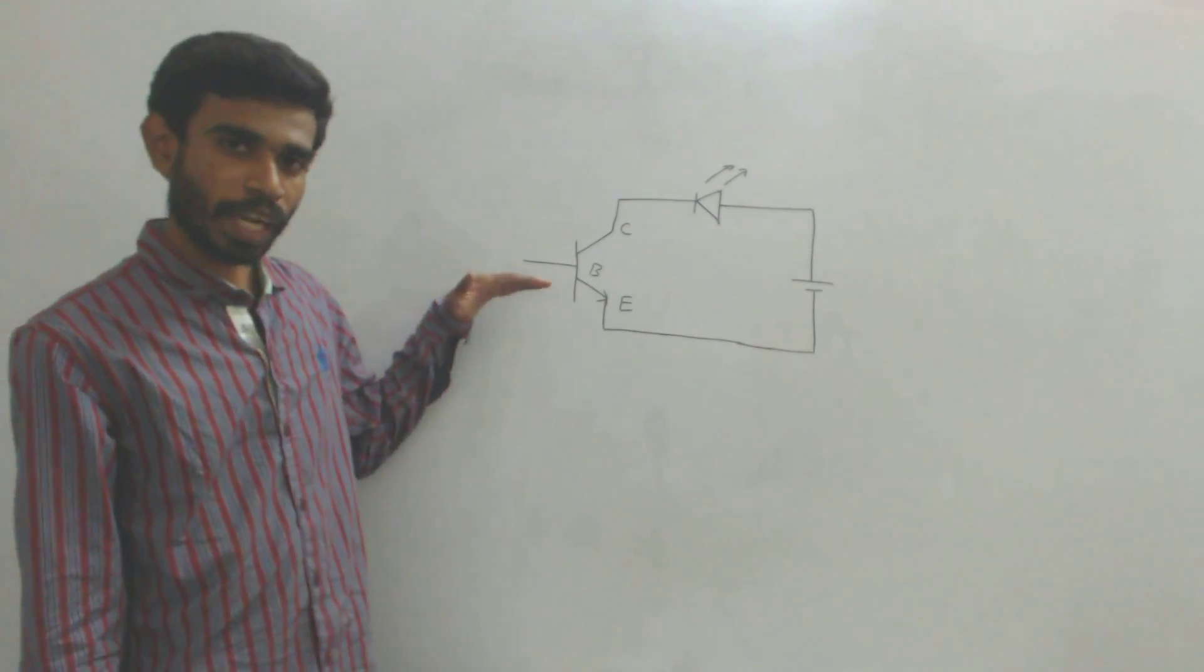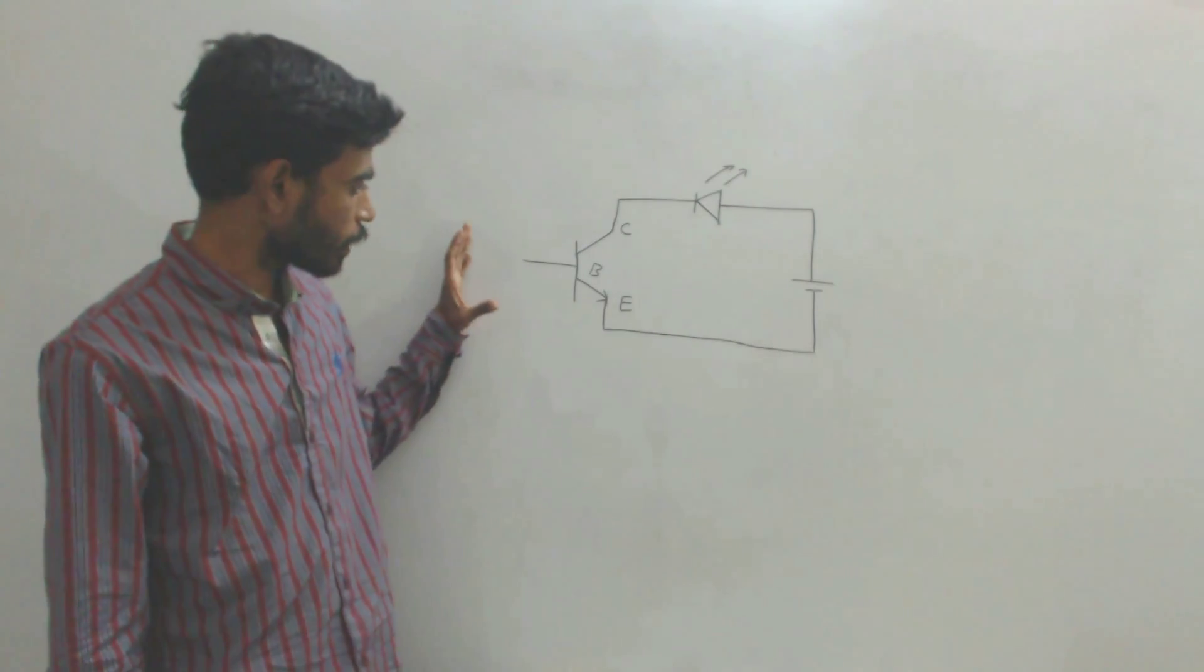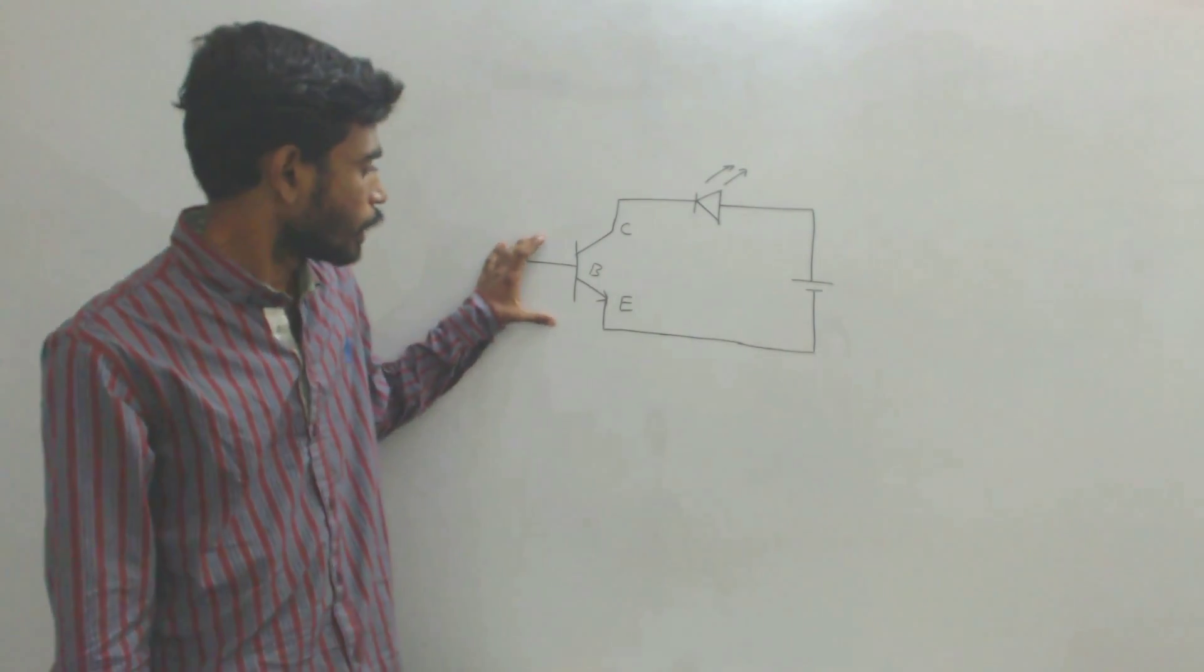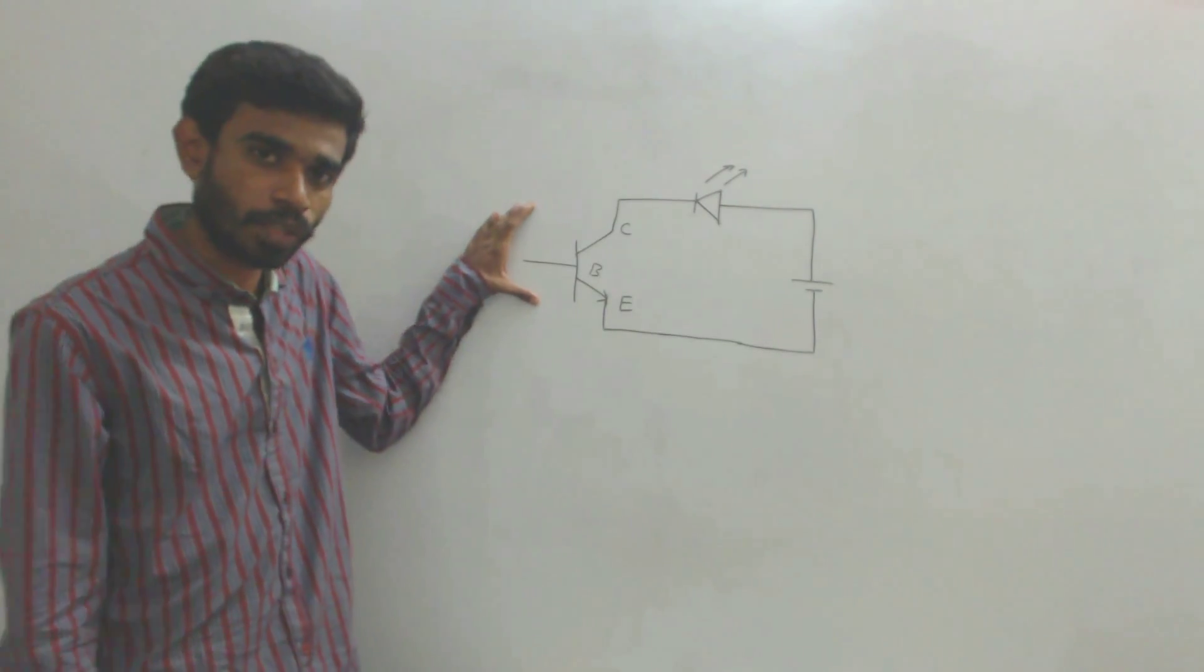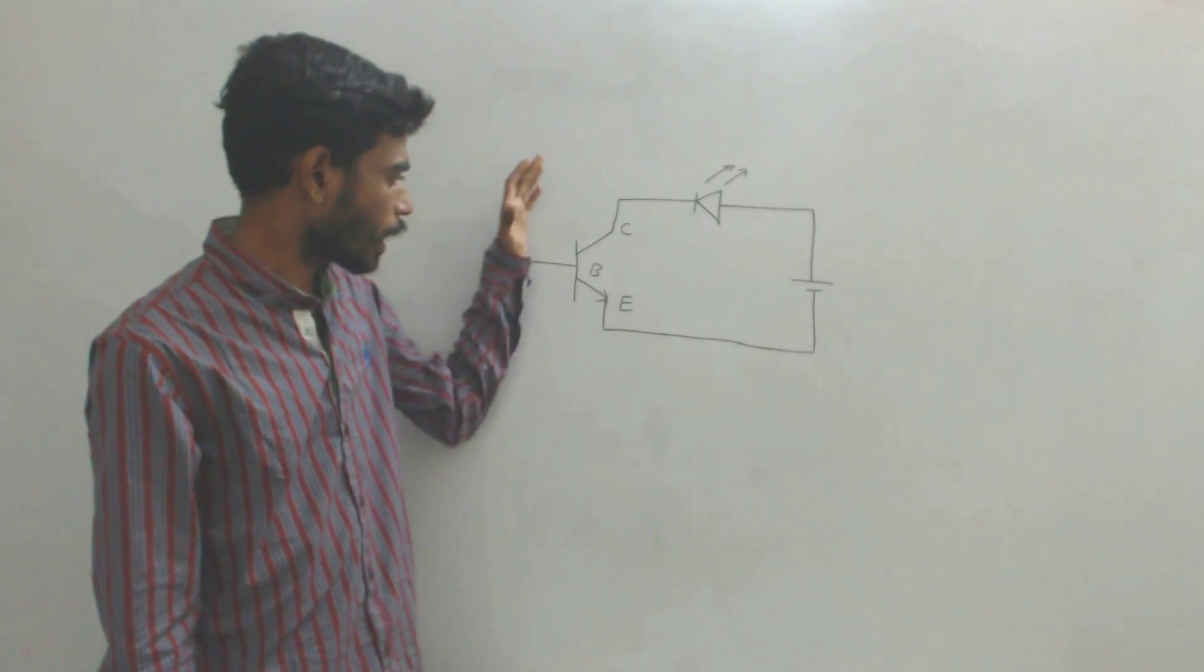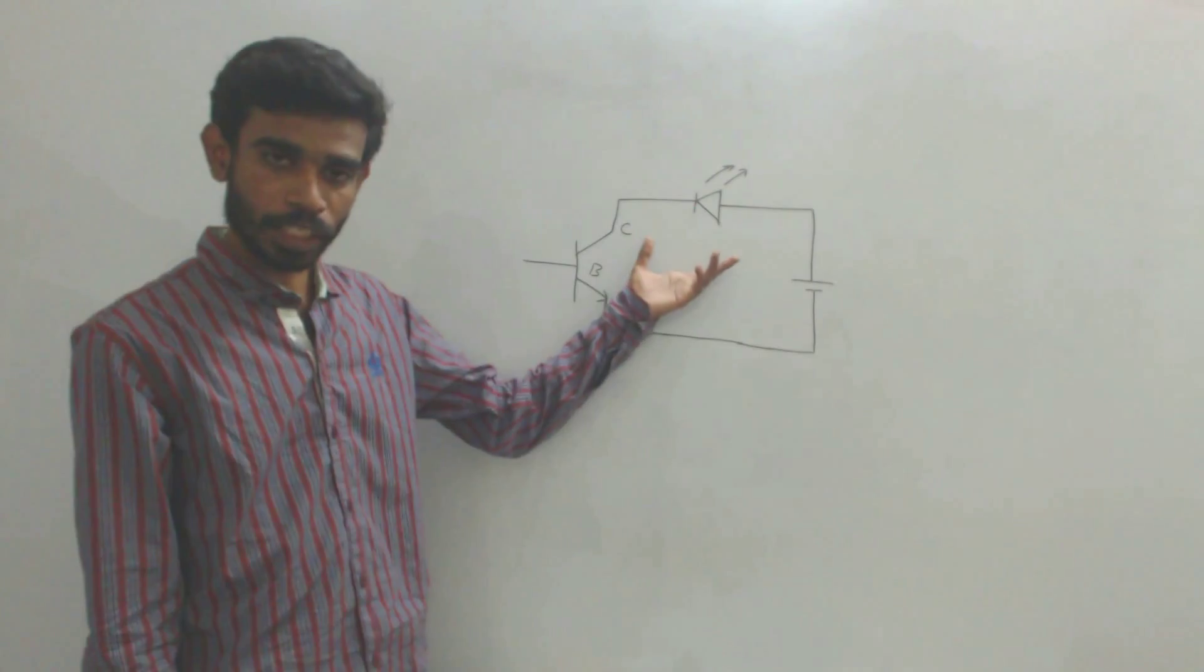If the base current through the transistor is large enough to drive the transistor to saturation region, then the transistor behaves as a closed switch and current flows through the circuit and the LED glows.